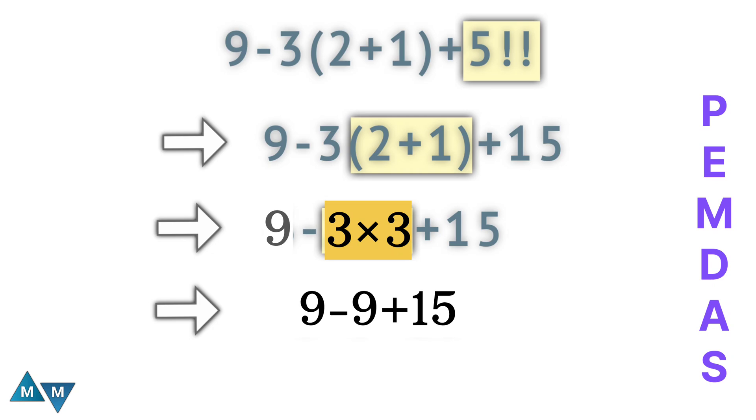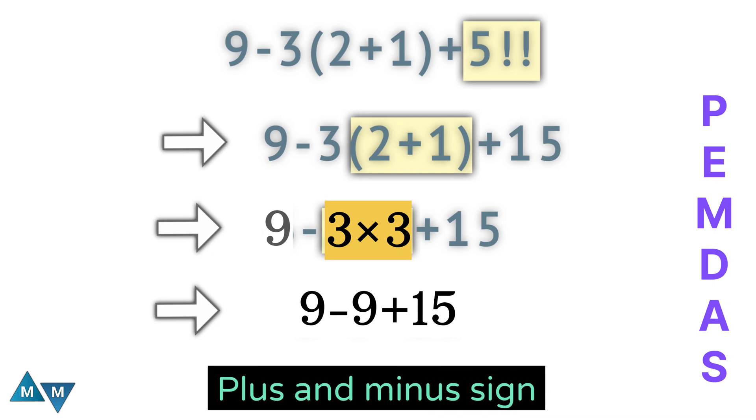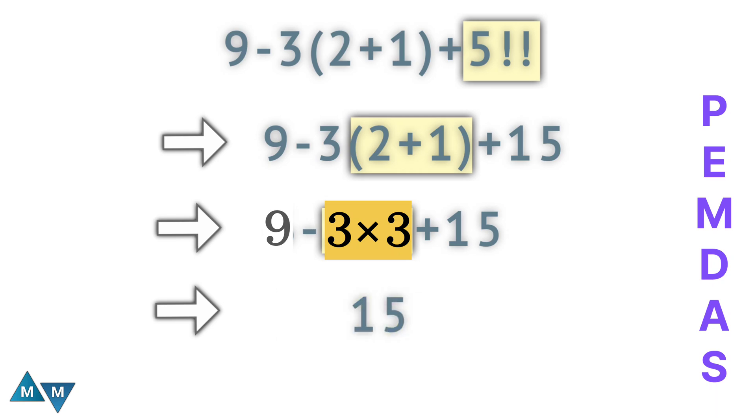Now the expression only contains plus and minus signs. Since both signs have the same priority, the expression will be solved from left to right. 9 minus 9 gives 0. Finally, we get 15. This is our final answer.